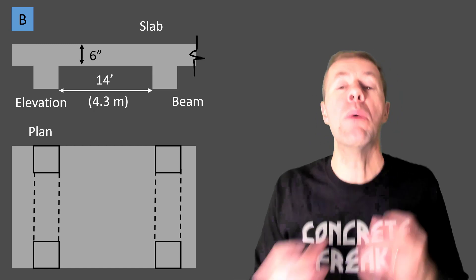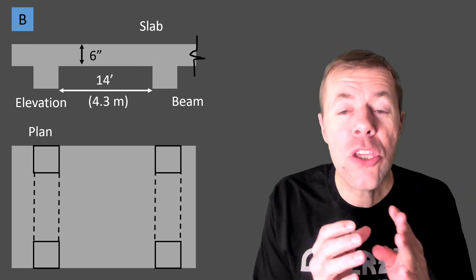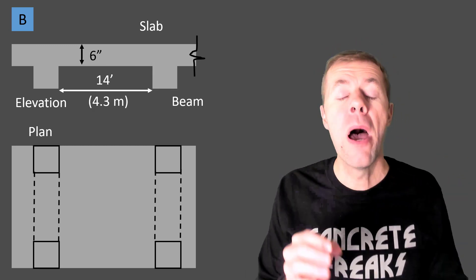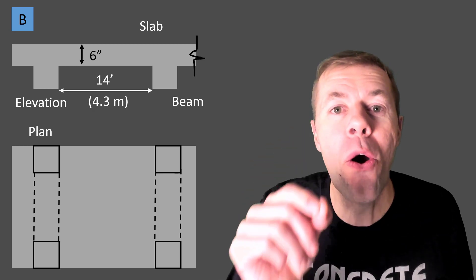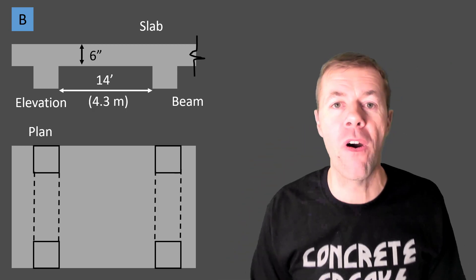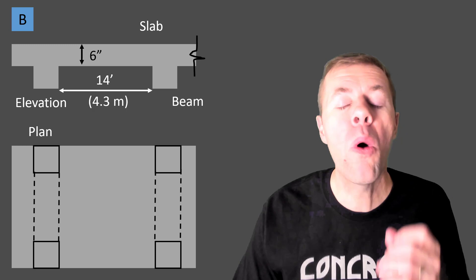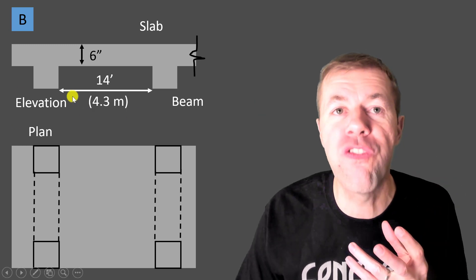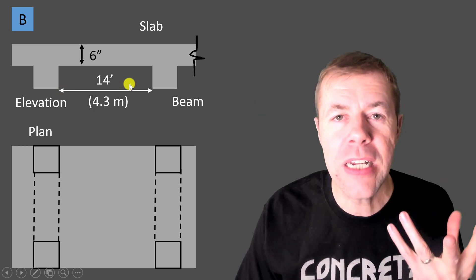Now how about case B? Well the only difference is that you continue it over the beam. But guess what? You don't have to continue it very far. Just a little bit will all of a sudden allow you to use 14 feet for this interior span.